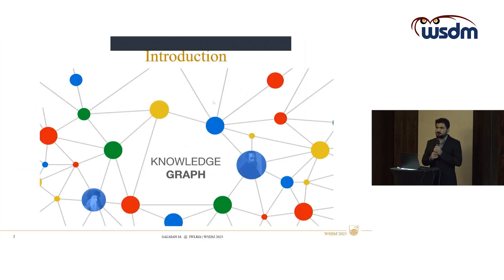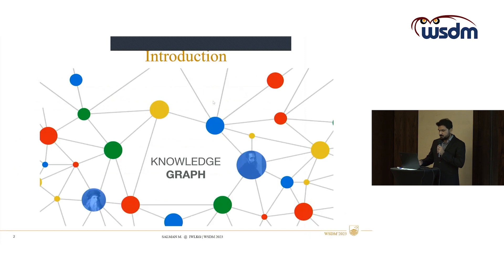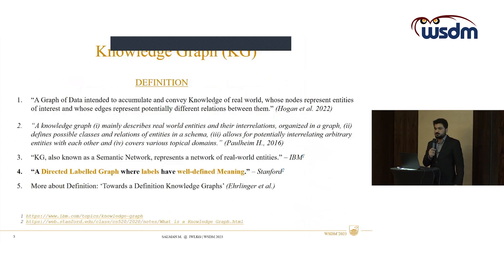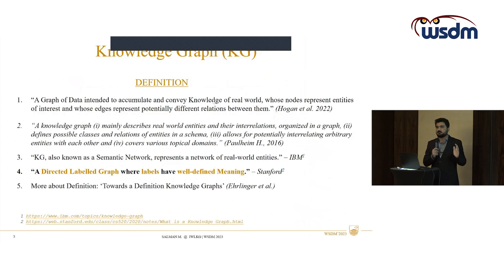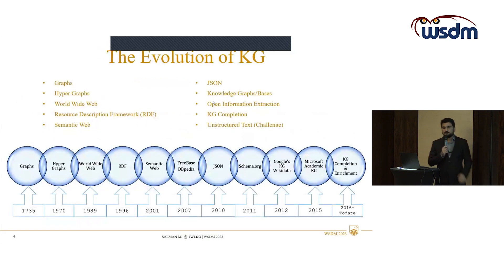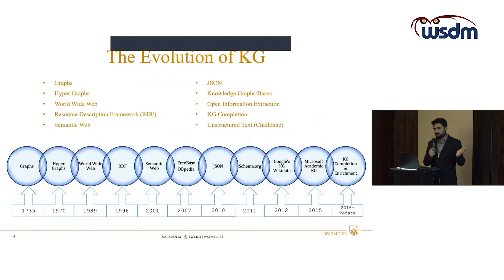Since we have already covered knowledge graphs in the previous two presentations, I will just go through one definition from Stanford: a knowledge graph is a directed labeled graph where the labels have well-defined meaning — they are correct and complete, so there is no ambiguity in those labels. If we look into the evolution of knowledge graphs, they were first invented in 1735, followed by hypergraphs.